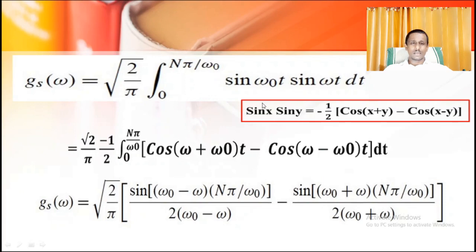For the integration, we use the identity: sin(x)sin(y) = −(1/2)[cos(x+y) − cos(x−y)]. Here x = ω₀ and y = ω. Therefore our equation changes to √(2/π) × (−1/2) × integral from 0 to nπ/ω₀ of [cos((ω₀+ω)t) − cos((ω₀−ω)t)] dt.